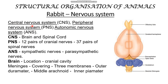First, let's look at the Central Nervous System, that is CNS. In CNS, the word 'Central' means the central organs of the body. If we draw a line along the body, the organs along that line are the brain and spinal cord. So, the Central Nervous System consists of the brain and spinal cord.